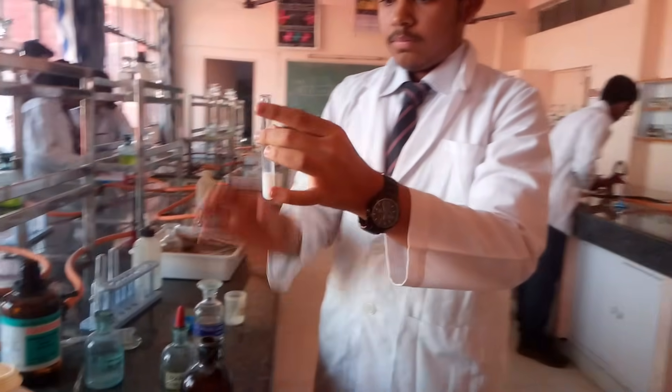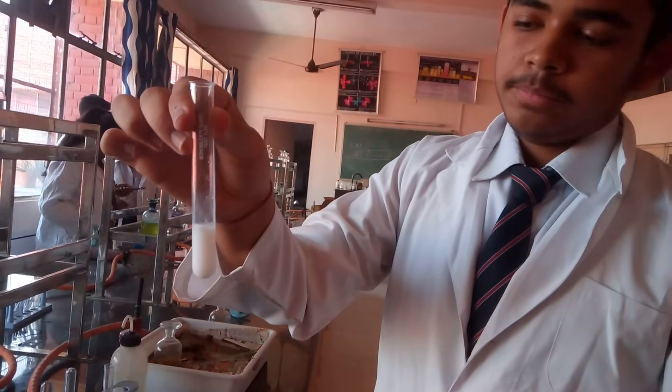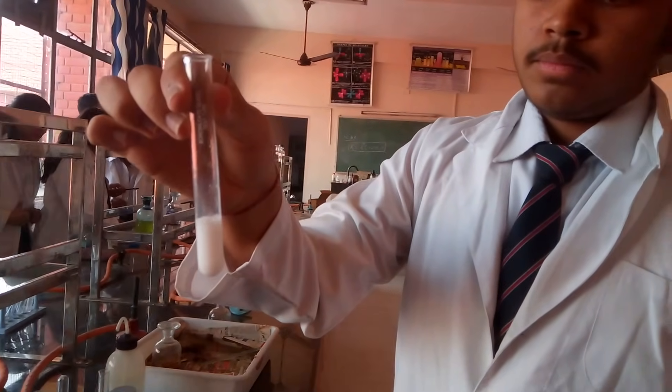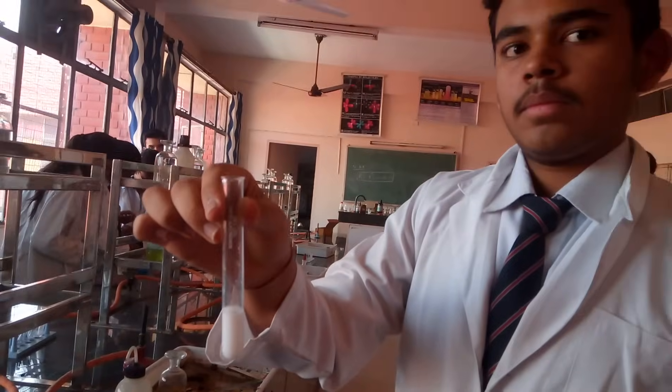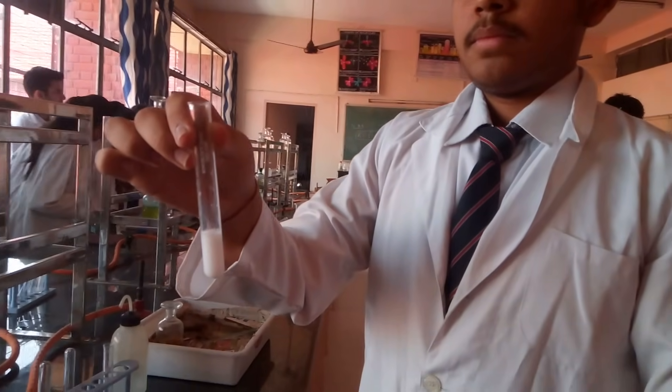On addition of silver nitrate solution, you can see the formation of a white precipitate. This white precipitate is of silver chloride. Now to confirm further, you need to dissolve this precipitate in ammonium hydroxide. Since our aim is to dissolve the precipitate, there is no point in taking this lot of precipitate. Discard half of it.